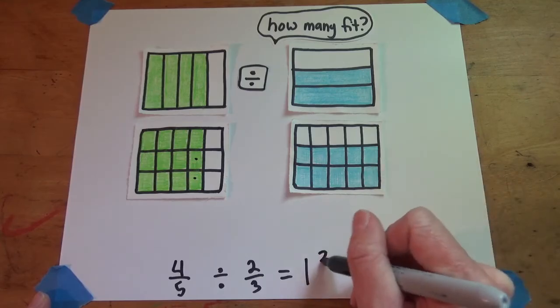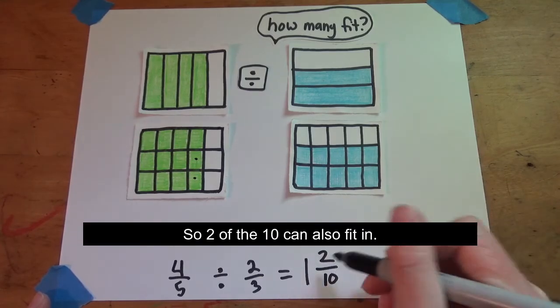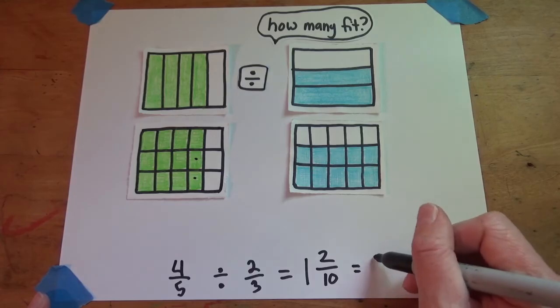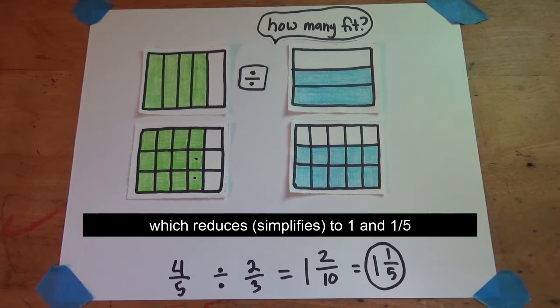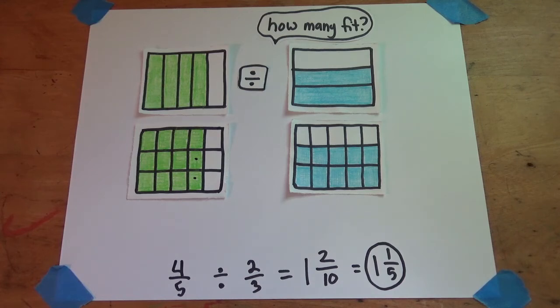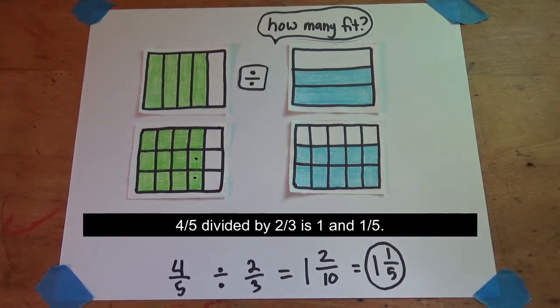Two additional ones, so two of the ten can also fit in, which reduces to one and one-fifth. Four-fifths divided by two-thirds is one and one-fifth.